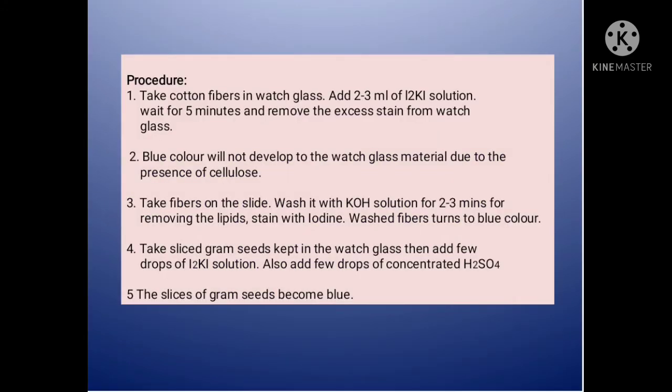Procedure: Take a cotton fiber in a watch glass. Add 2–3 ml of I2K solution. Wait for 5 minutes and remove the excess stain from the watch glass. Blue color will not develop in the glass material due to the presence of cellulose. Then take a fiber on a slide and wash it with KOS solution for 2–3 minutes.